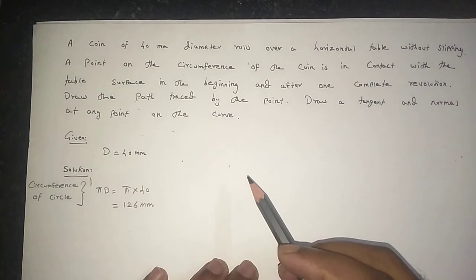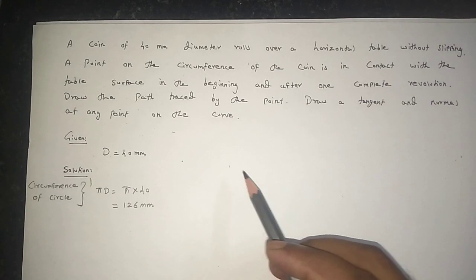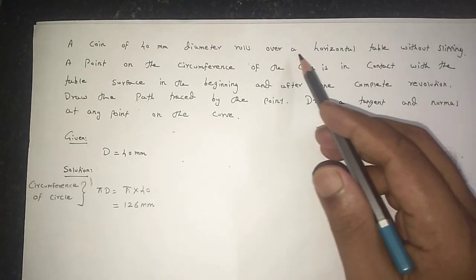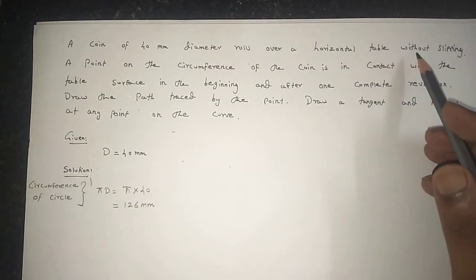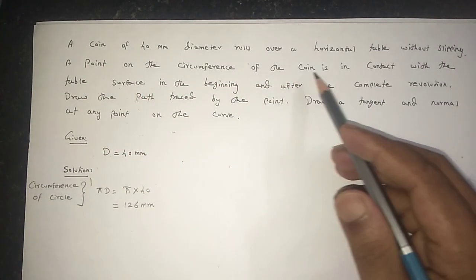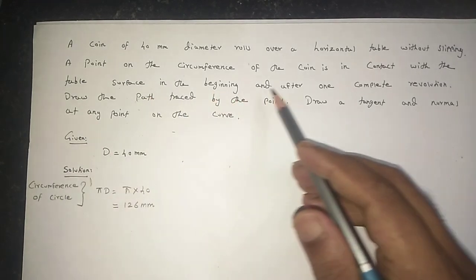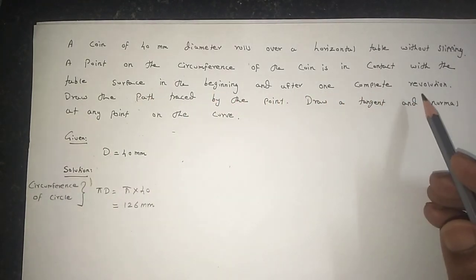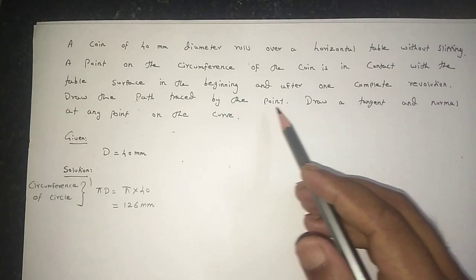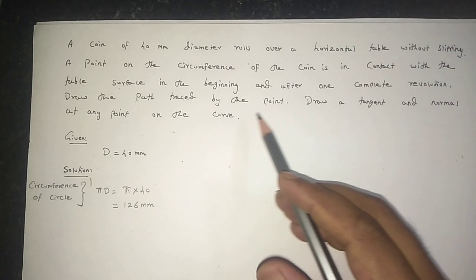In this video, I am going to explain how to draw a cycloid. The question is: a coin of 40 mm diameter rolls over a horizontal table without slipping. A point on the circumference of the coin is in contact with the table surface in the beginning and after one complete revolution. Draw the path traced by the point. Also draw a tangent and normal at any point on the curve.